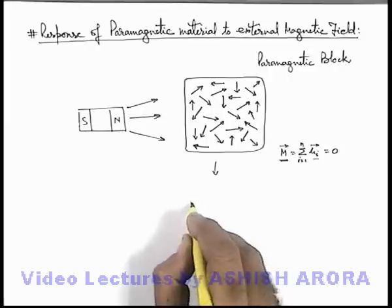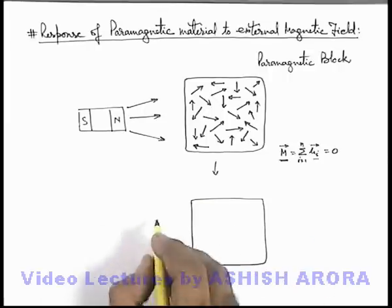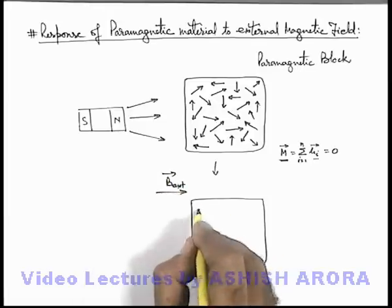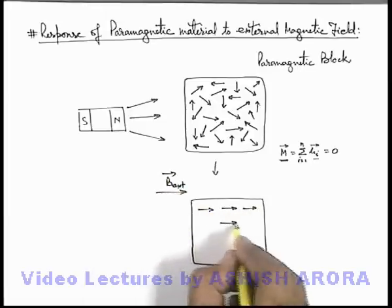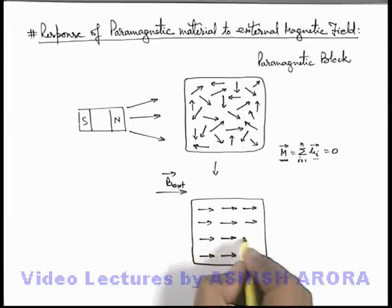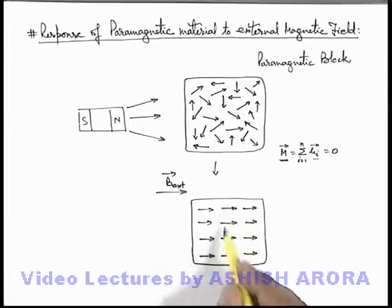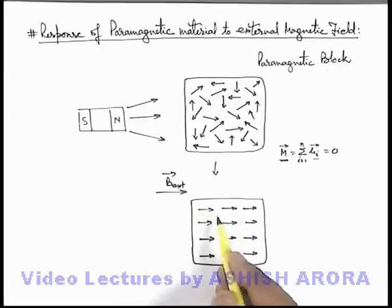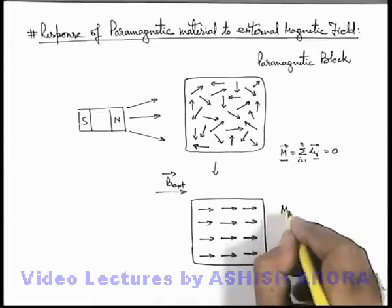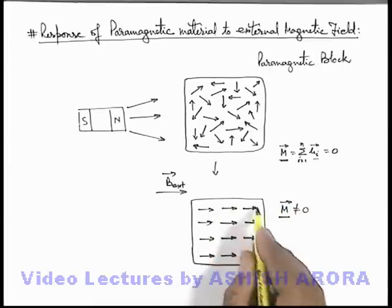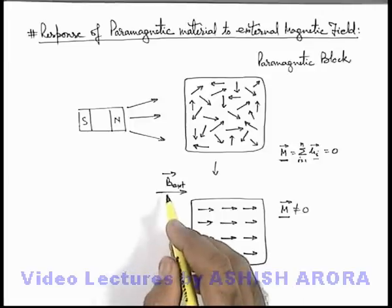After application of this magnetic field, the situation would be like this: if this is the direction of the external magnetic field, then all these dipoles will align in the direction of the external field. Due to the lattice structure of the element, exact alignment may not be there depending on the value of the external field, but due to the torque some alignment will be there, and in this situation the final magnetic moment of this block will be non-zero.